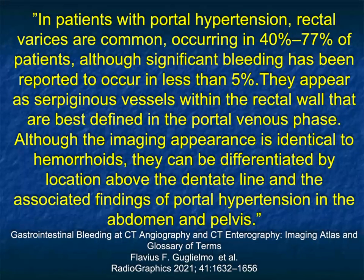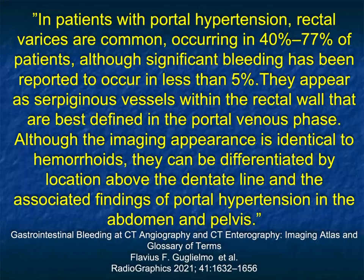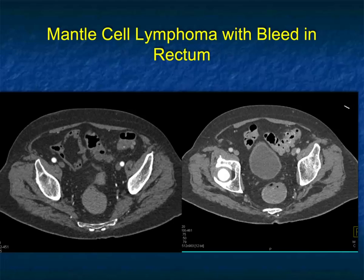Patients with portal hypertension — rectal varices occur in up to three-quarters of cases. But significant bleeding is less than 5%. One of the challenges is that sometimes you see very prominent varices. Particularly when they're impressive and the patient has GI bleeding, this can be a source of GI bleeding. But remember, 95% of patients with rectal varices will not have GI bleeding.